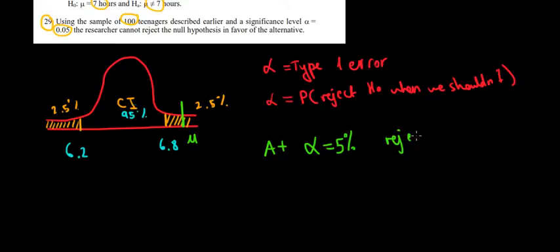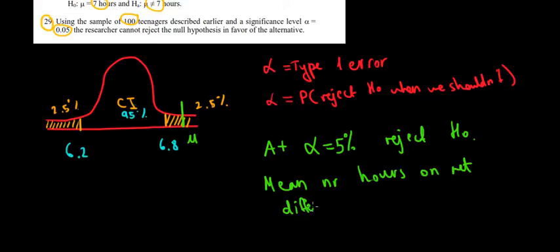So, we reject the null hypothesis. The mean number of hours on the internet differs significantly than 7. Hope this makes sense and we are done.